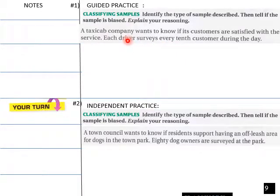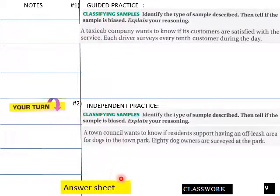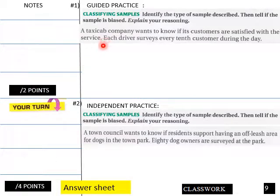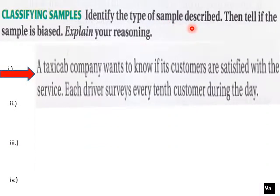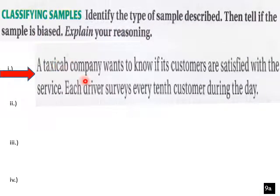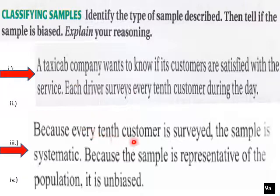Here's a practice problem for students. A taxi cab company wants to know if its customers are satisfied with the service. Each driver surveys every tenth customer during the day. Identify the type of sample described, then tell if the sample is biased and explain your reasoning. Because every tenth customer is surveyed, the sample is systematic. Because the sample is representative of the population, it is unbiased.